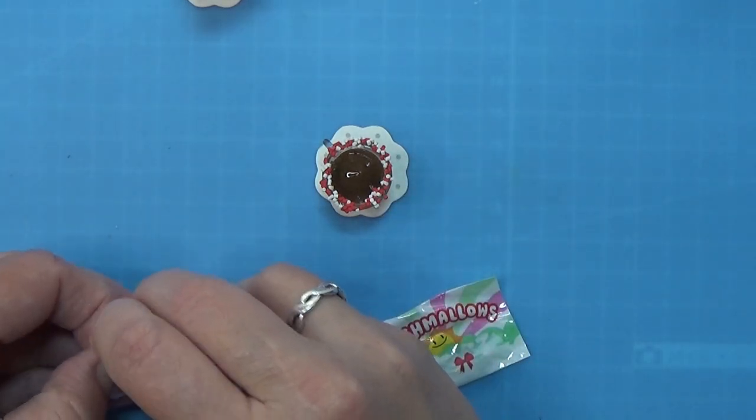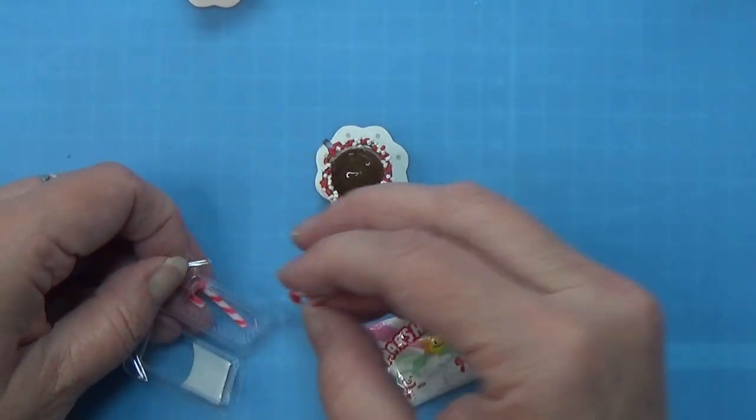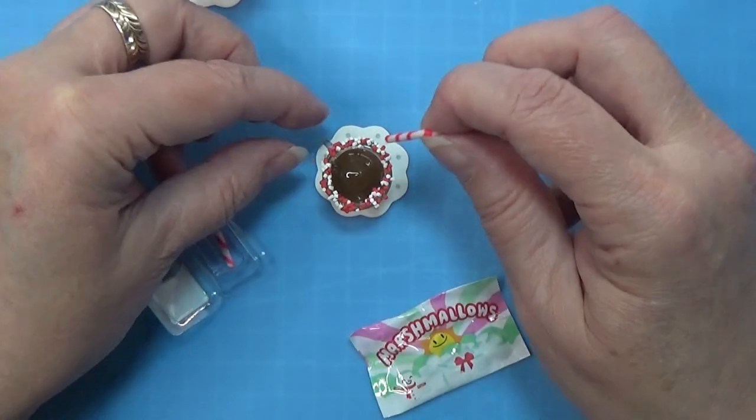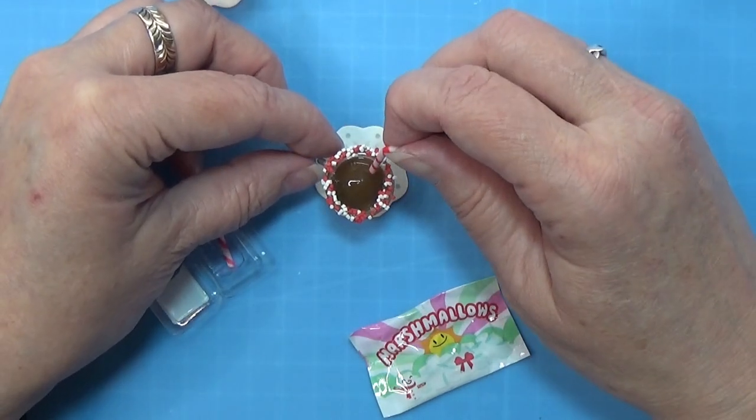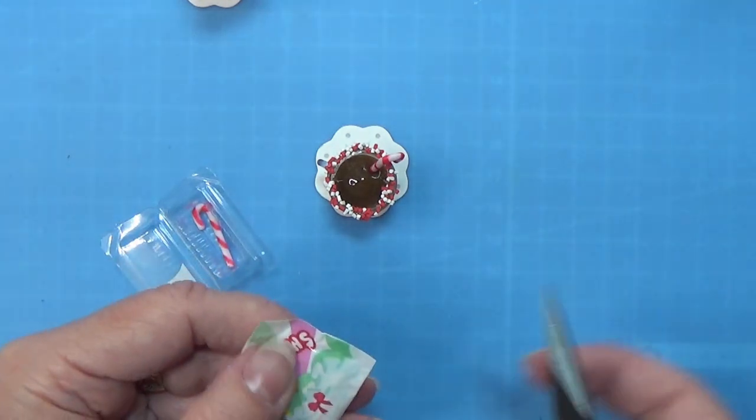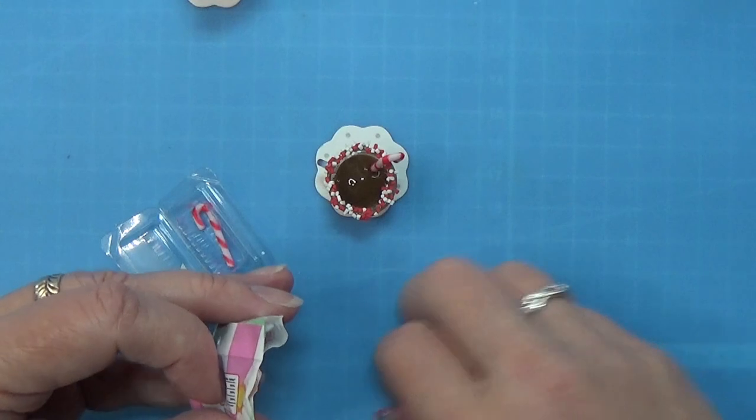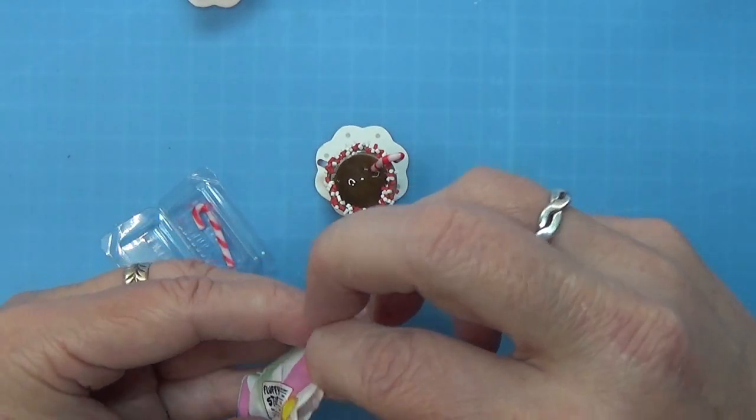Let's open up these. Ah, that way. So we have two of these candy canes. So I'm just gonna put it into the chocolate like that.